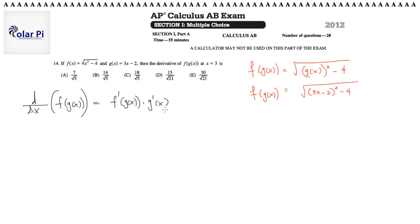This only works if you choose to see this as a composition of two functions, which is what's suggested anyway. We just need to evaluate this at x equals 3 — the vertical bar meaning evaluate — and that gives us f prime of g of 3 times g prime of 3.